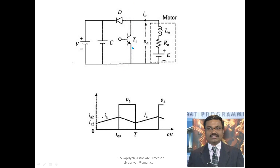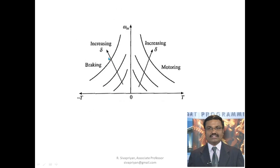For regenerative braking, the circuit also remains the same — only the field winding and the variable E value are different. When the transistor is turned on, current flows from A1 through the transistor to A2. When the transistor is turned off, current flows from A1 through diode D to the supply (V+ to V−) then to A2, returning energy to the supply. The current decreases when the transistor is off and increases when it is on.